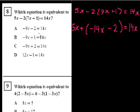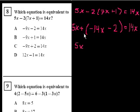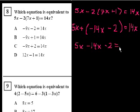On all of these choices, they have 14x on the right-hand side, so they just want us to simplify this. So this simplifies to 5x plus minus 14x minus 2 is equal to 14x.